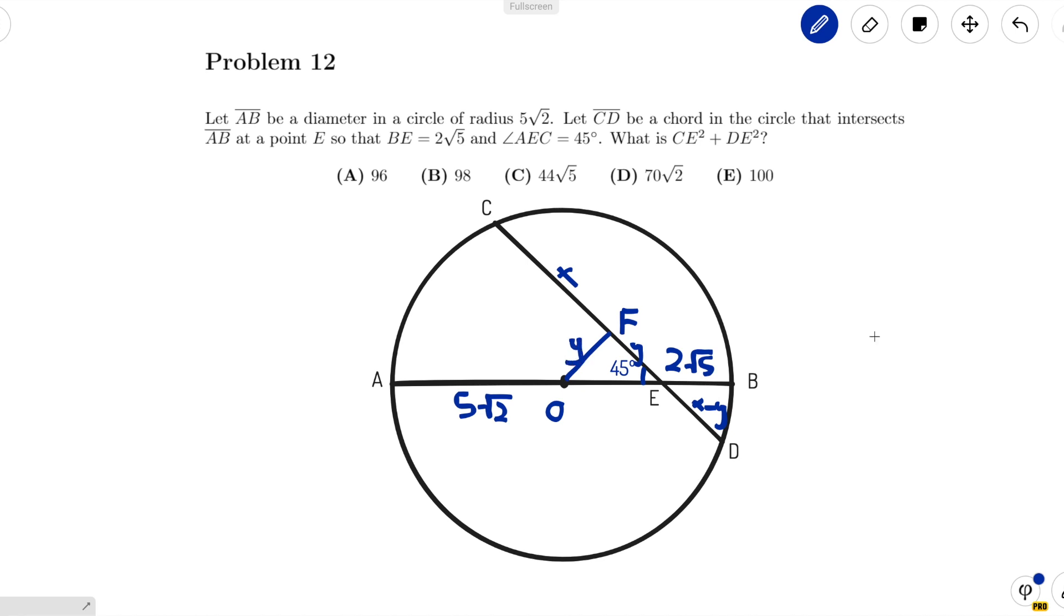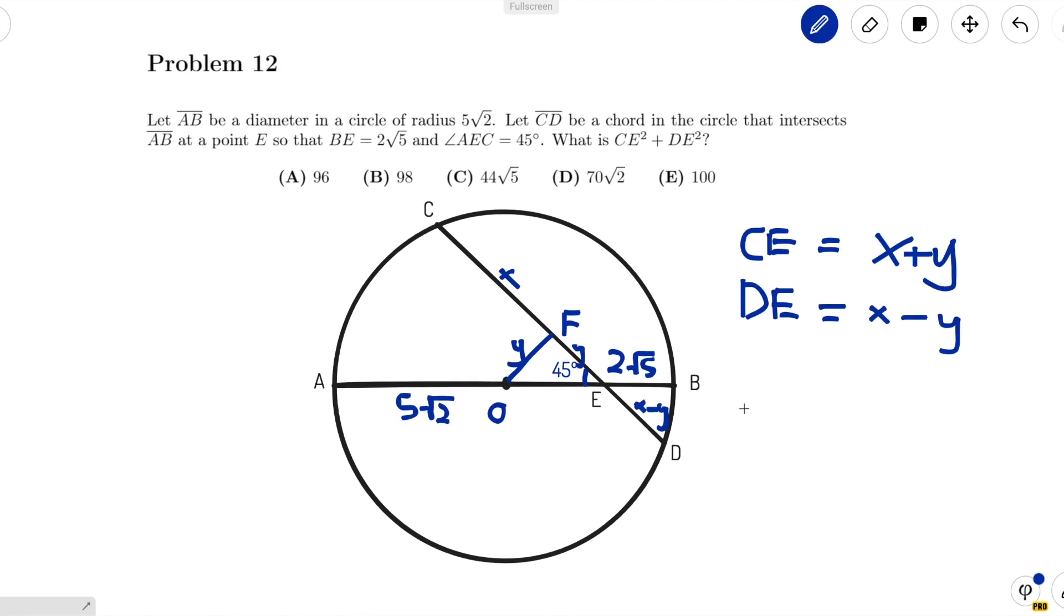Now, we have all the side lengths that we could possibly draw. Let's try to find CE squared plus DE squared. CE equals X plus Y, and DE equals X minus Y. So that means, if you do the algebra, CE squared plus DE squared equals 2X squared plus 2Y squared.